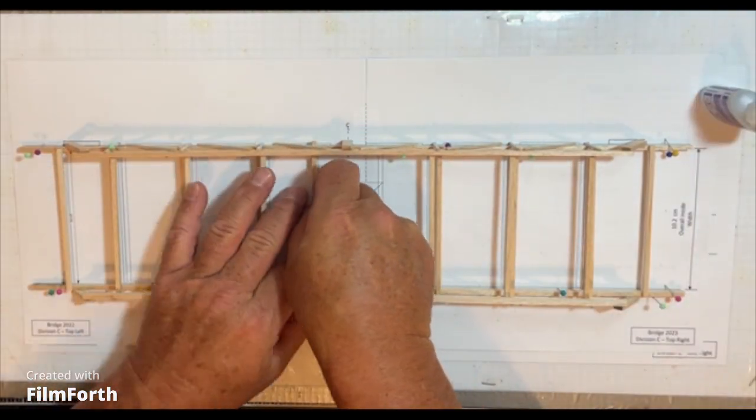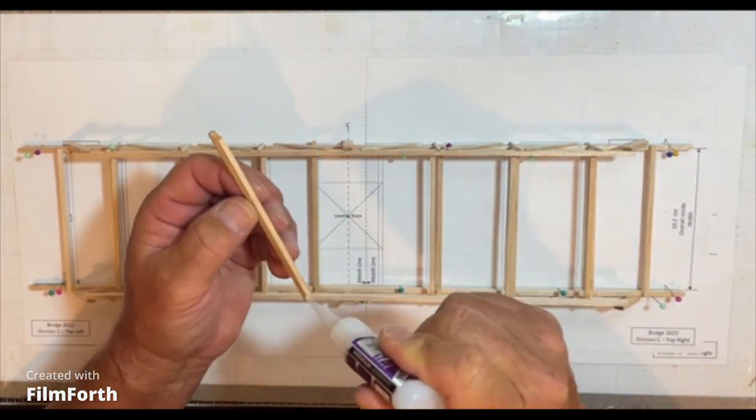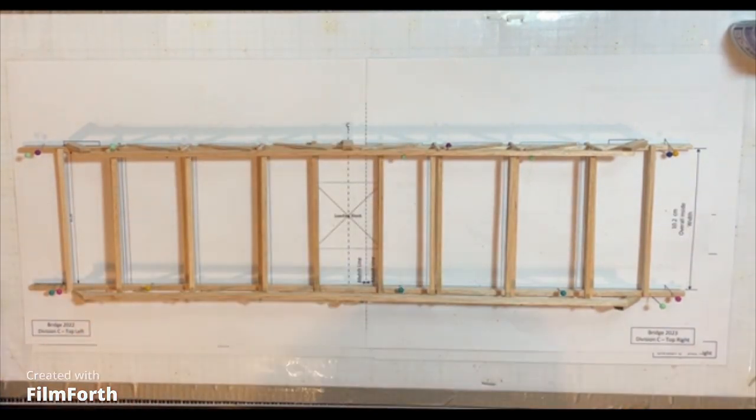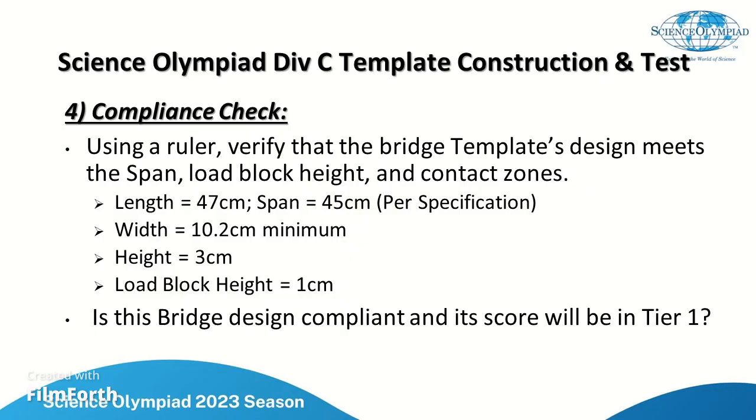And then at this point the bridge is pretty much done. Now that the bridge construction is complete, does it meet all the specifications stated in the official Division C bridge rules for span, contact points, and load block height?